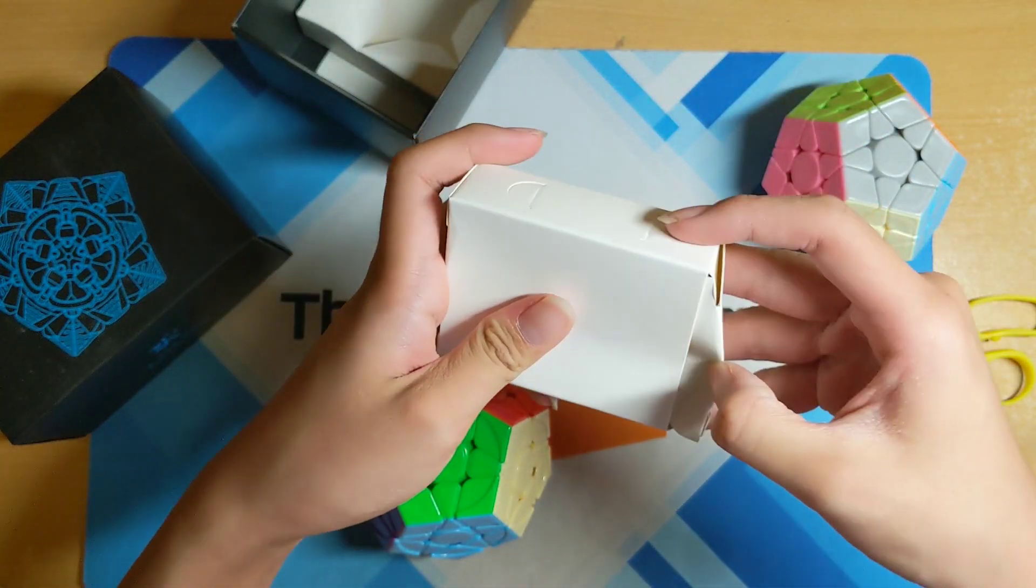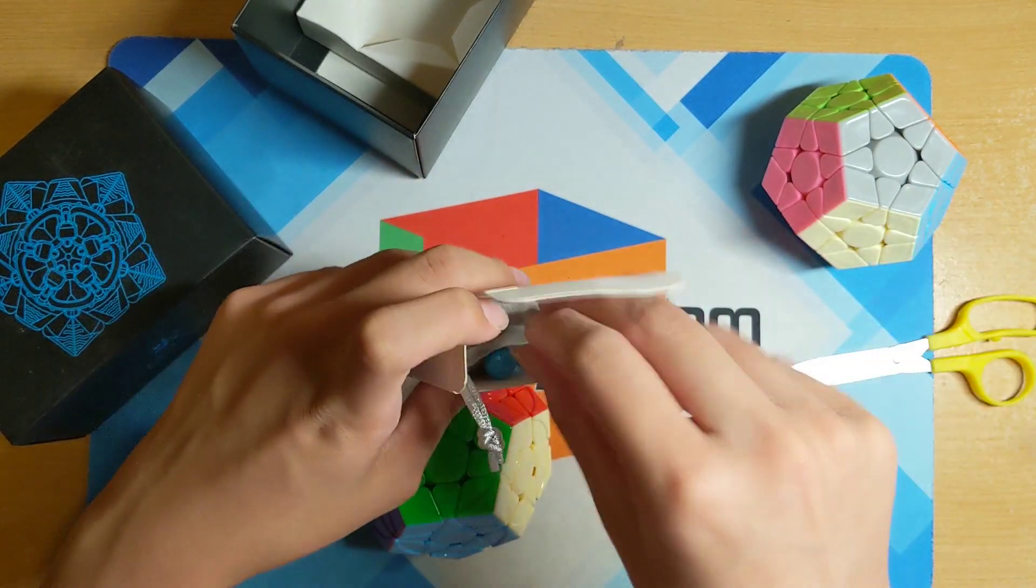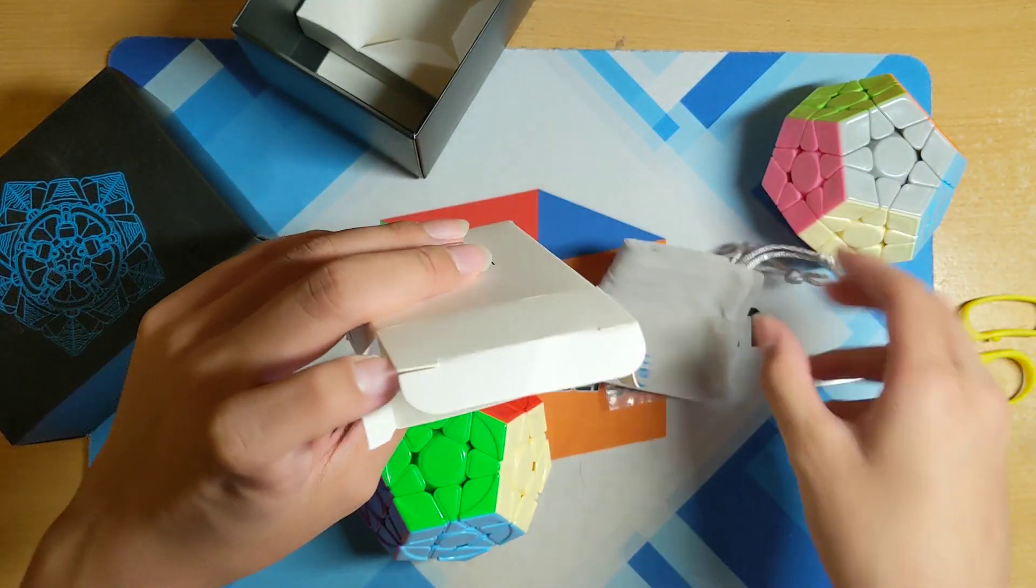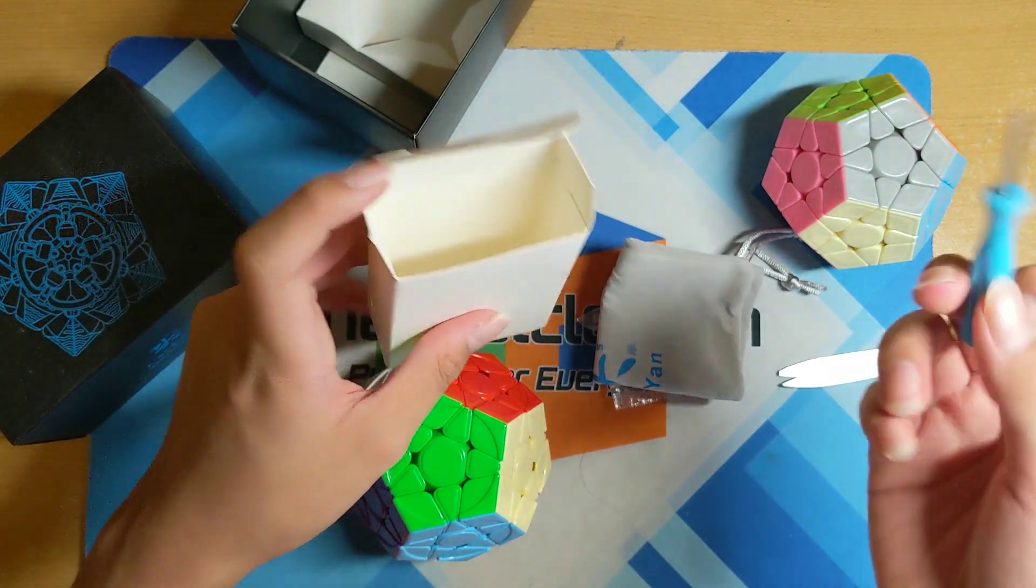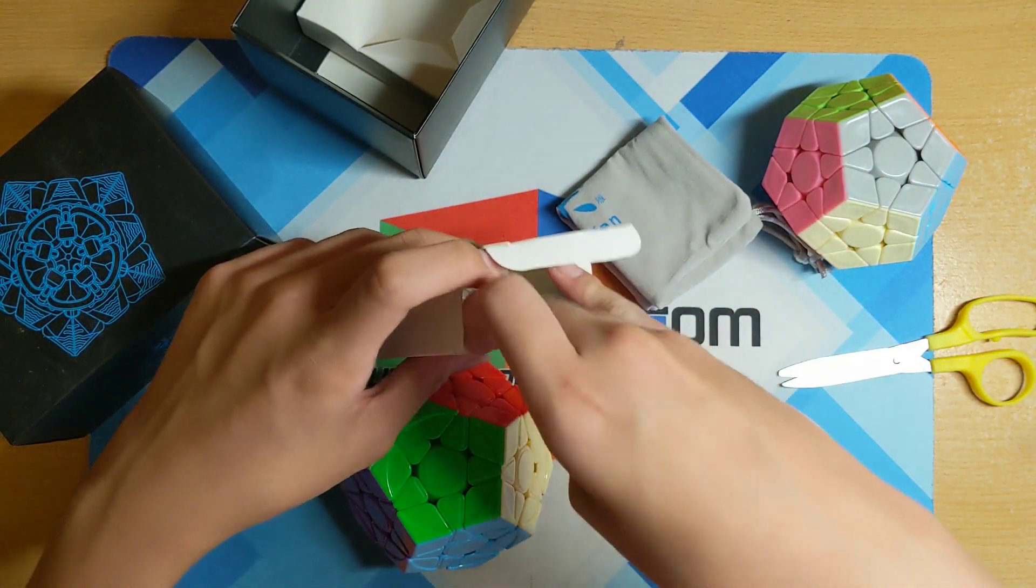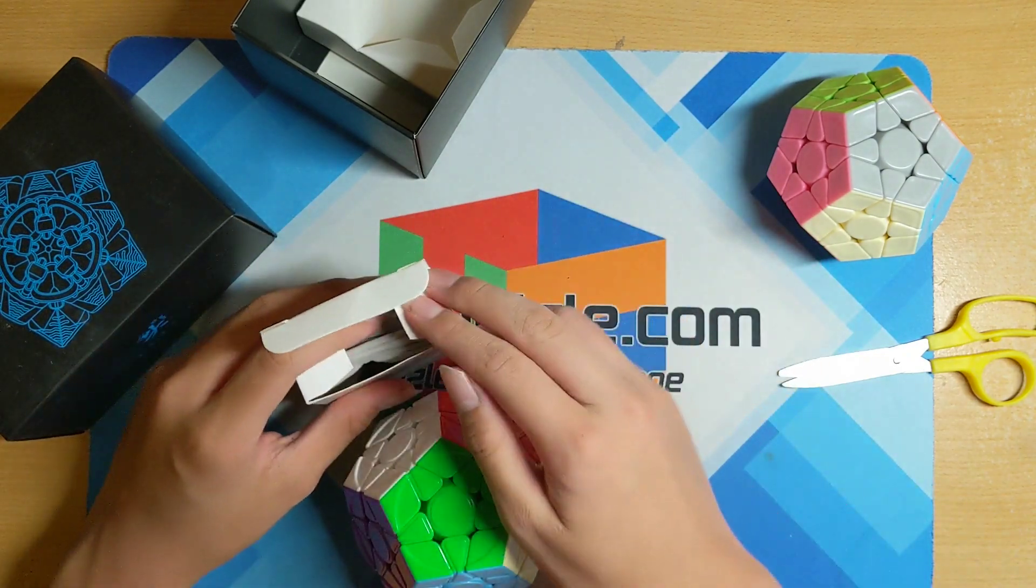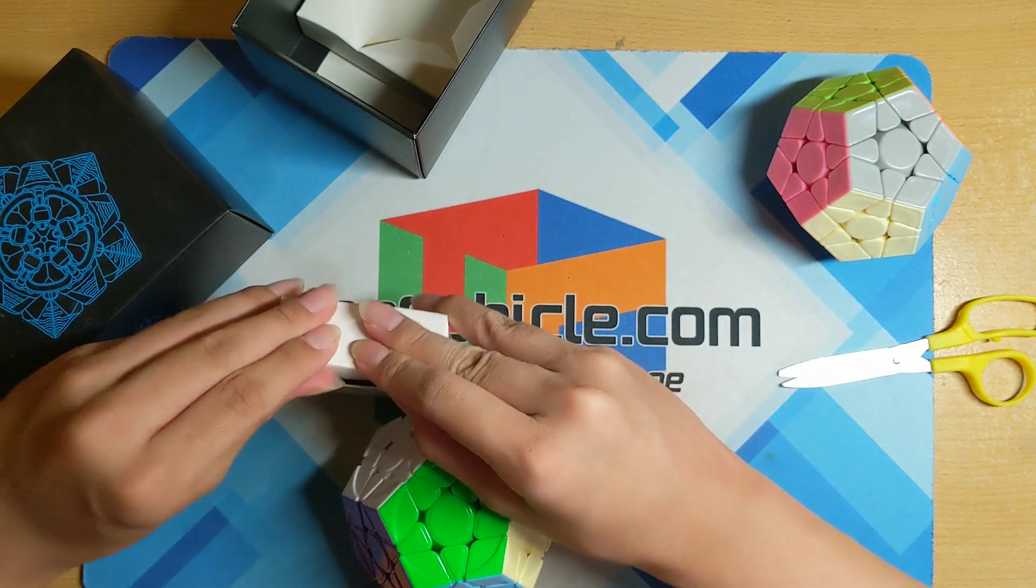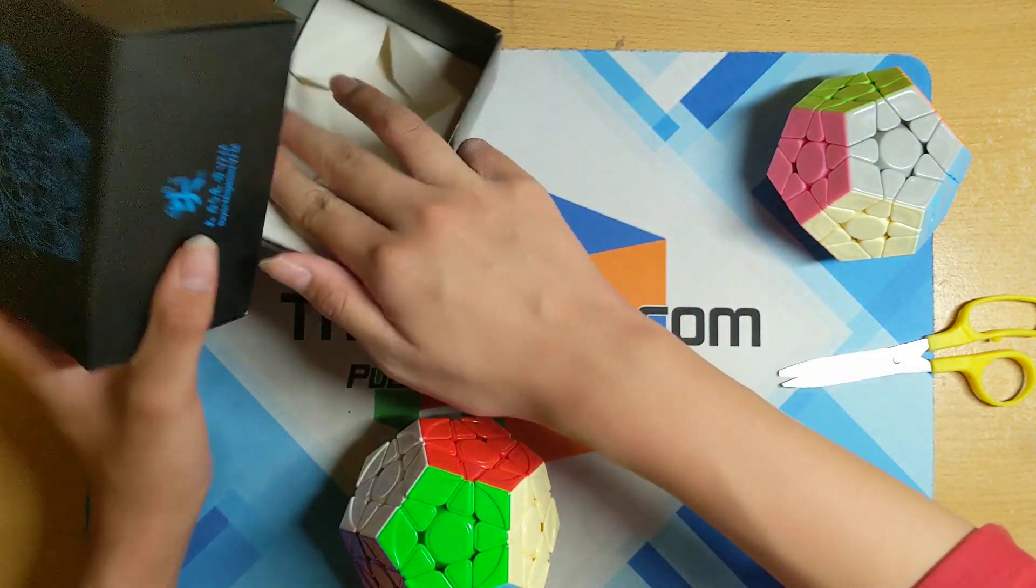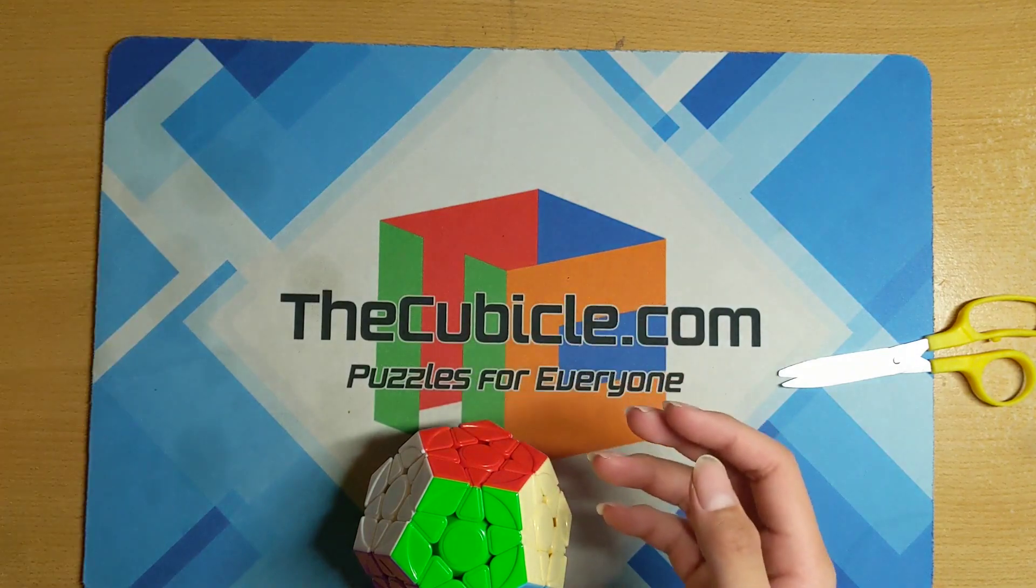Let me check what's in here quickly. I don't know if it's that important. Let's see, you got extra springs, you have a bag and a screwdriver. Okay, so standard stuff. Let me just put everything back in here. Let's move on. So that's the Dian V2M Megaminx, also really looking really nice.